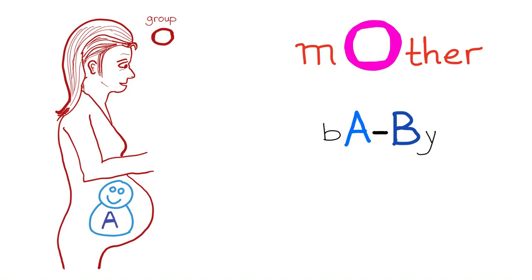During the exam you don't have time to think logically — you're just answering the question. So here's the mnemonic. Write 'mother' like this. Mother has an O, so mommy is blood group O. Baby is blood group A or B — not blood group AB; I'm saying either A or B. That's why there is a dash or hyphen in between.